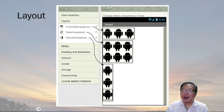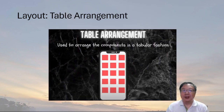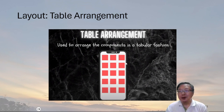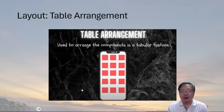App Inventor defaults to piling components on top of each other. When you drag three objects into the screen, they will pile up like a stack of pancakes. You can change the object order, but what if you want the objects next to each other? That's where layout comes in. One option is table layout, where the table arrangement lets you arrange components in a grid. You can put only one component in each cell, and if you add more, only the last component will be displayed. This is the table arrangement — in a tabular or grid form.